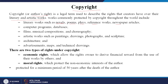There are two types of rights under copyright. One is the economic right, which allows the rights owner — the creator — to derive financial reward from the use of their work by others. For example, if an author's work is used by someone else, that person has to pay a royalty. The second is moral rights, which protect the non-economic interest of the author, protected for a minimum period of 50 years after the death of the author.